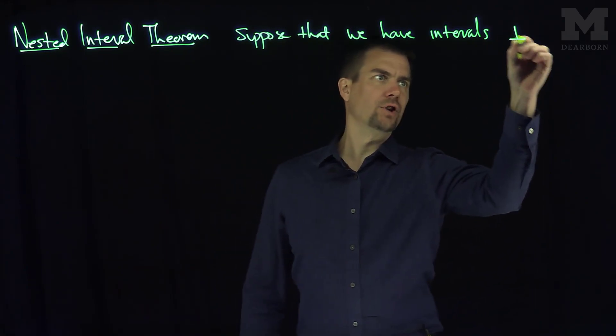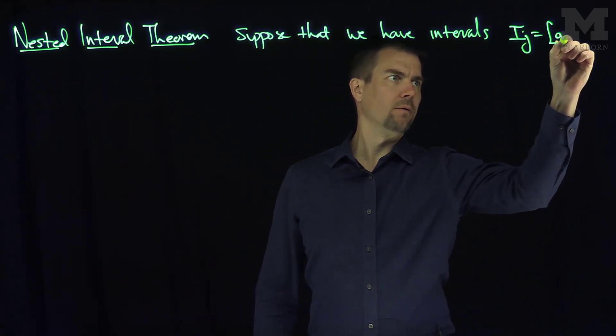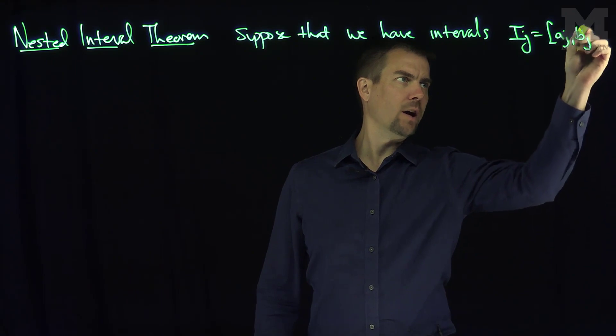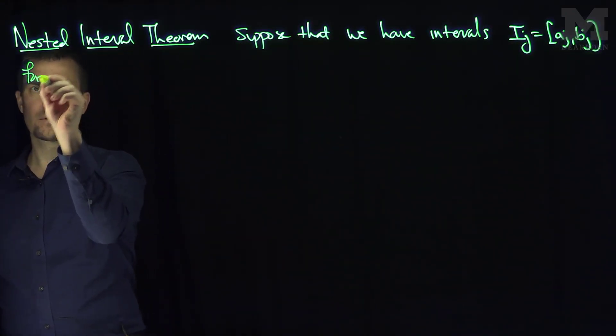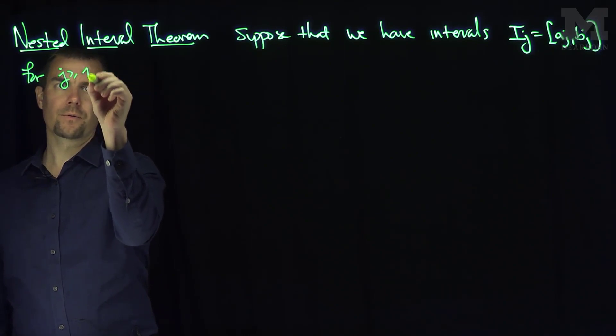of intervals Ij, which is the closed interval from aj to bj, where aj and bj are real numbers, for j bigger than or equal to one.